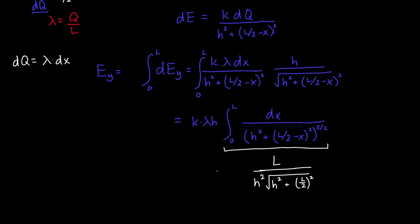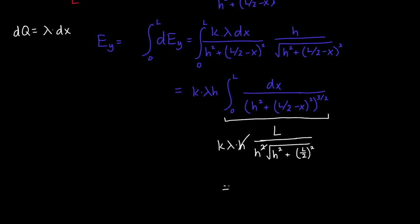And then we multiply this by K lambda H. And so one of the H's cancels, and we're left with K lambda L divided by H times H squared plus L over 2 squared. And this is the Y component of the electric field.